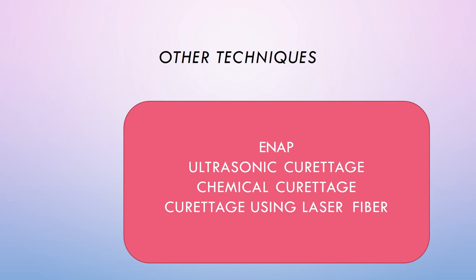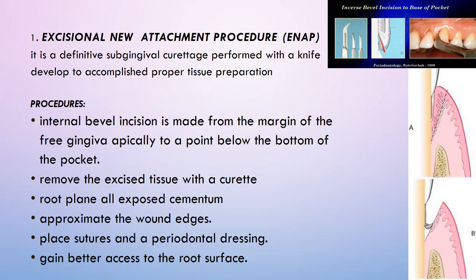Other techniques under curettage include: excisional new attachment procedure (ENAP), ultrasonic curettage, chemical curettage, and curettage using laser fiber. The excisional new attachment procedure is subgingival curettage performed with a knife. An internal bevel incision is made from the gingival margin to a point below the bottom of the pocket, followed by removal of the excised tissue with a curette.